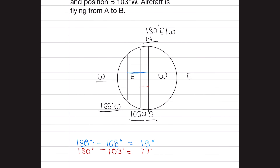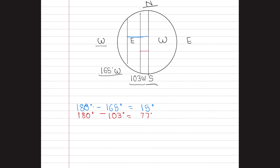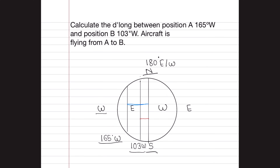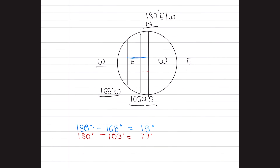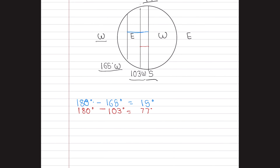We have the differences of both longitudes with reference to 180 degrees. Since both longitudes are in the same hemisphere — both are West — we know the rule: if two points are on the same hemisphere, we subtract. So 77 degrees minus 15 degrees gives us 62 degrees.